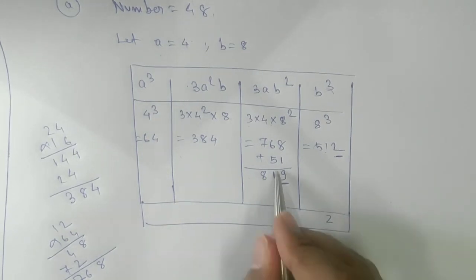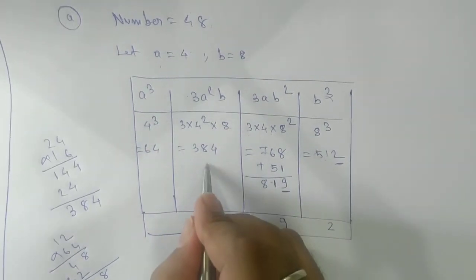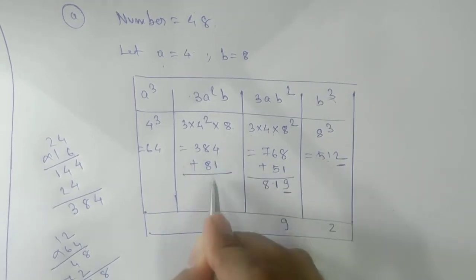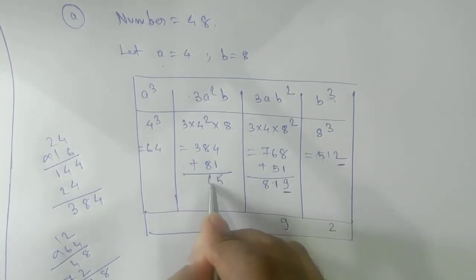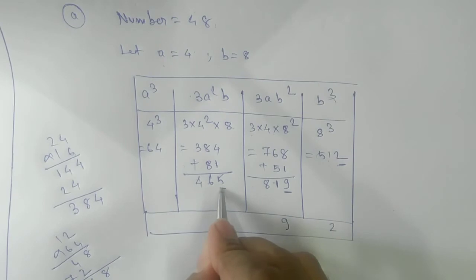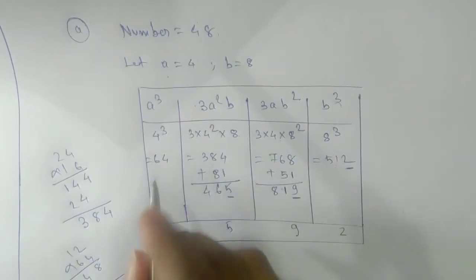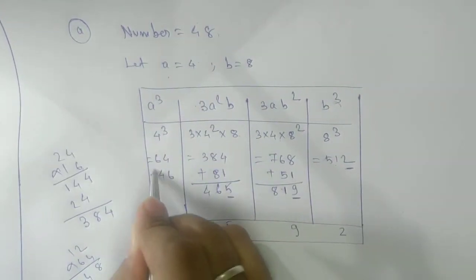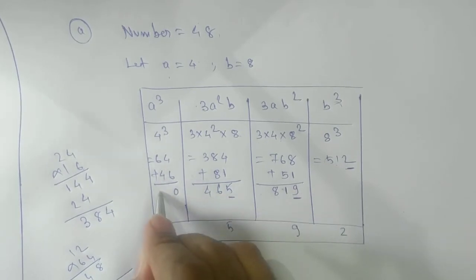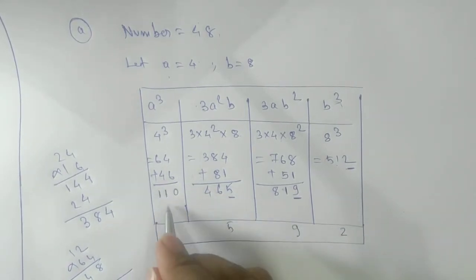So here we have 918. Out of this, we'll take again the unit digit number and the rest will send to this side for addition. 81 plus 564, so here we are getting 5, and 46 will be on this side.